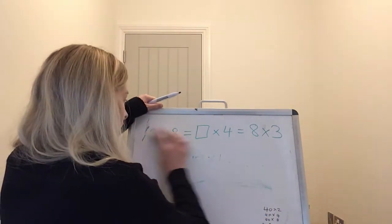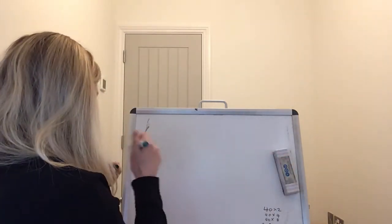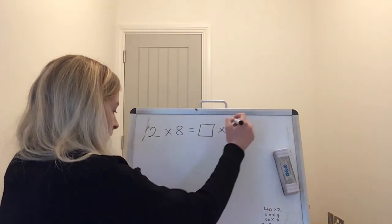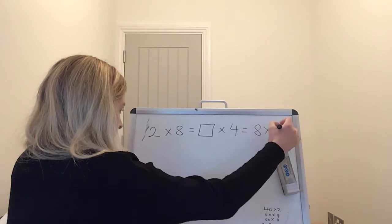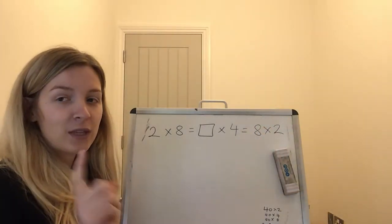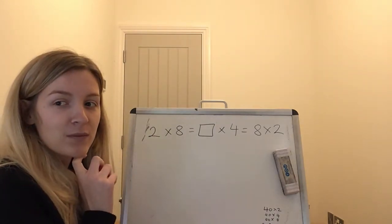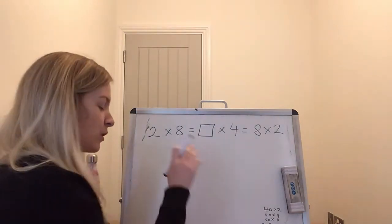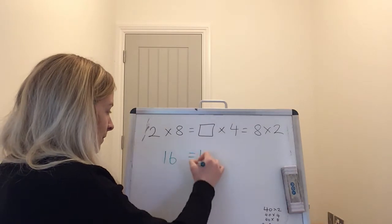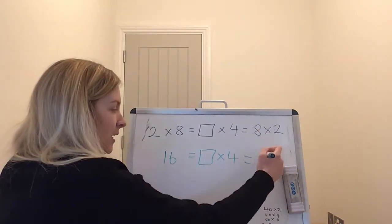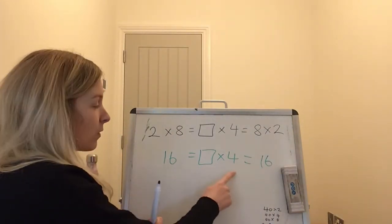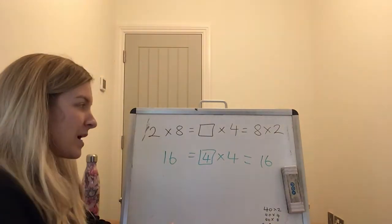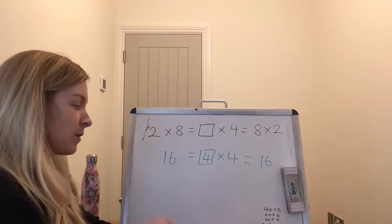Your turn. Do pause the video and have a good go at this one. Thinking about what you do know before you attempt to figure out what goes in that box. All done. Let's go through it. So we have 2 lots of 8 here, 16. 8 lots of 2 here is exactly the same, it's 16. Something times 4 is 16. 4 lots of 4. Well done you if that's what you got. No worries if you didn't. Go back and have another think. Slow it down. Go back to the beginning of the video and go back through it.